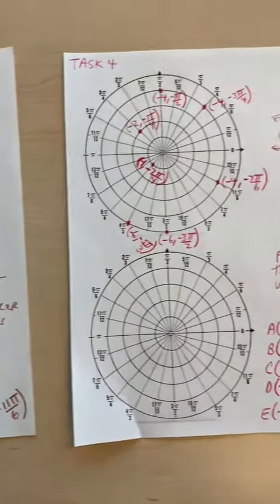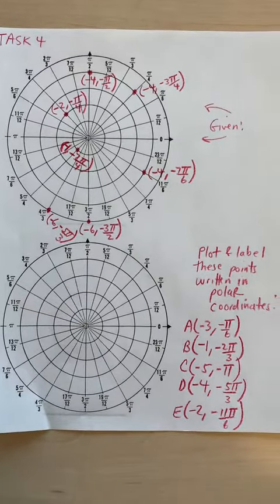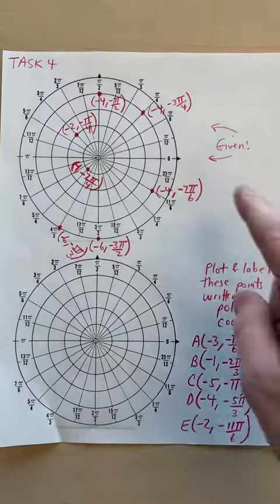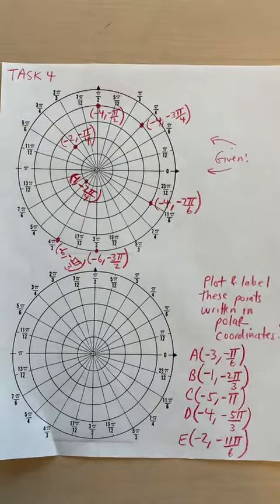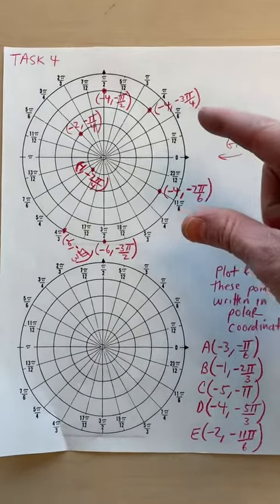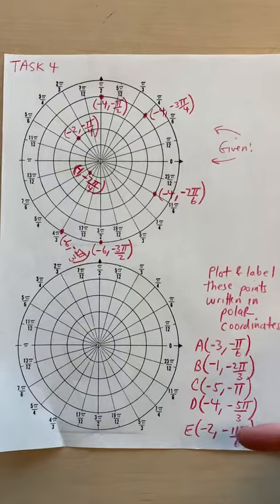And then we take the ingredients of thin slice two and three, and then we throw them in the four. Here, R and theta are both negative now. So can you see patterns here? And then plot these points right here.